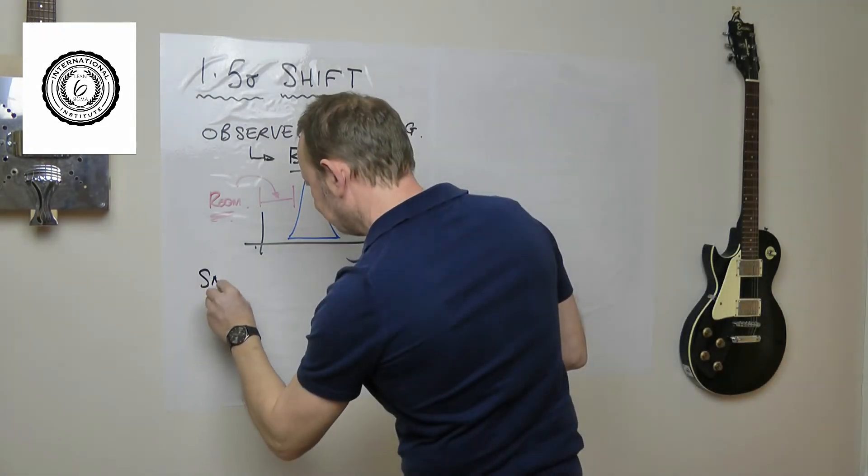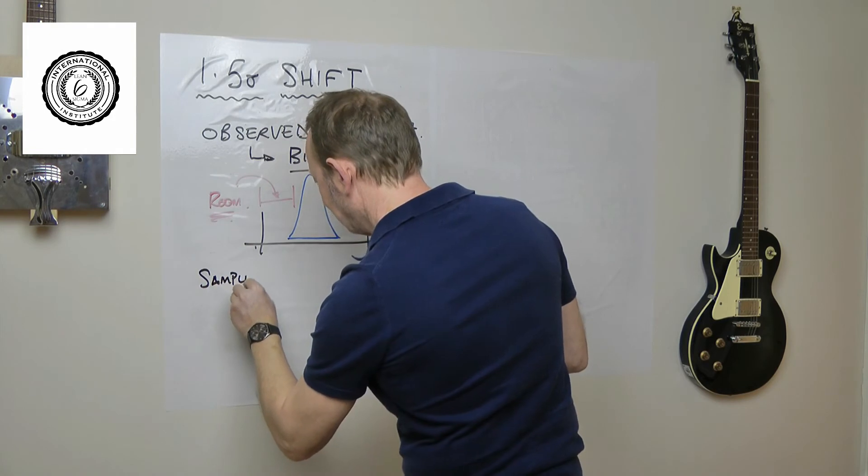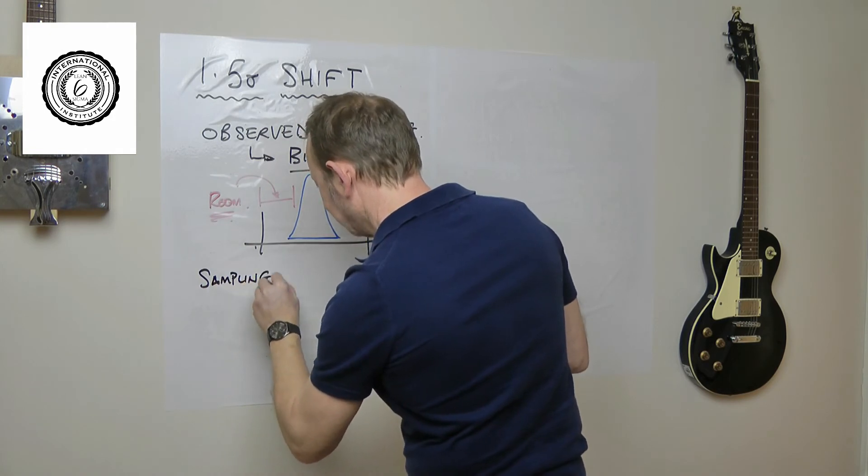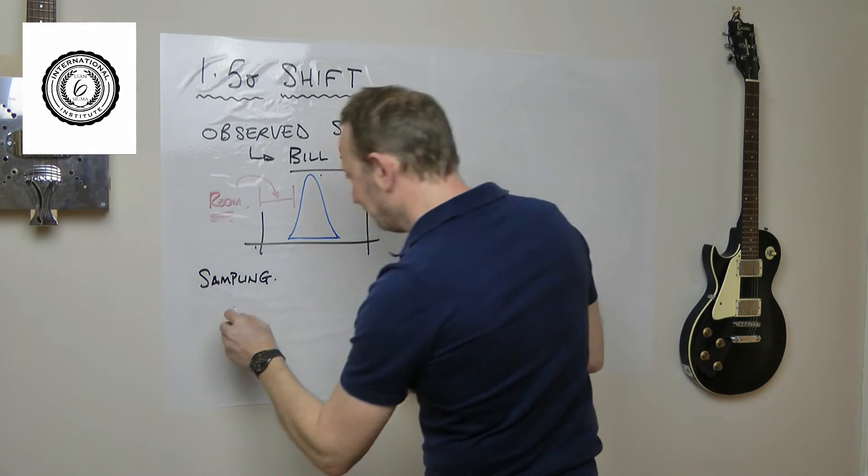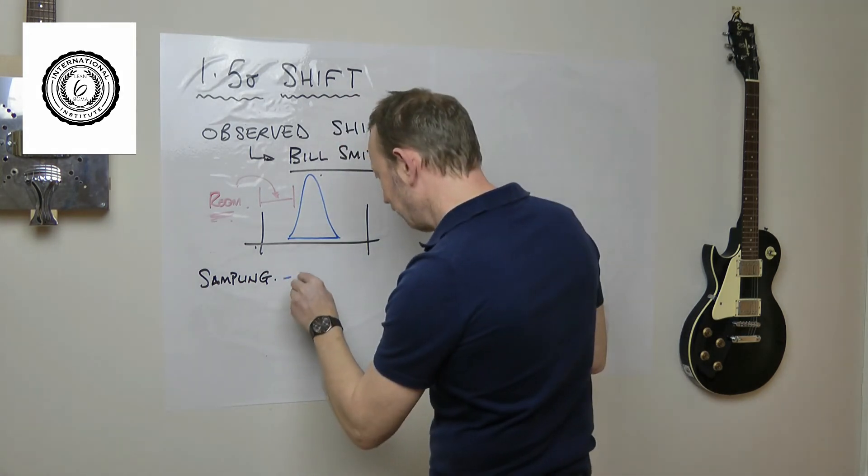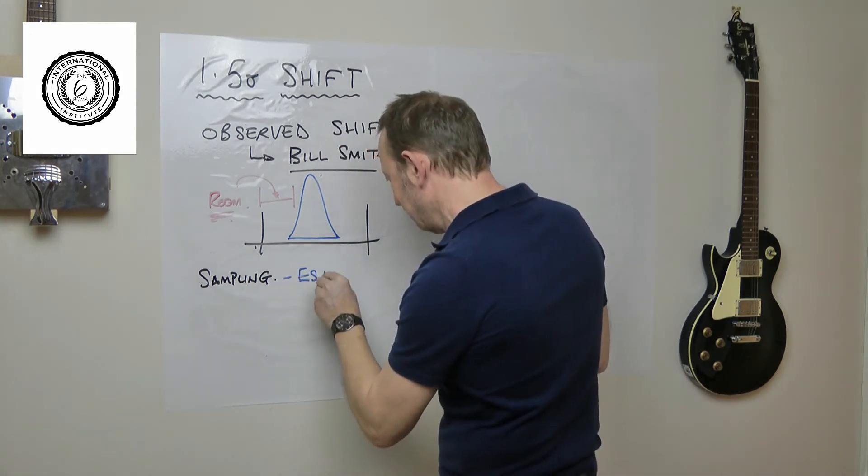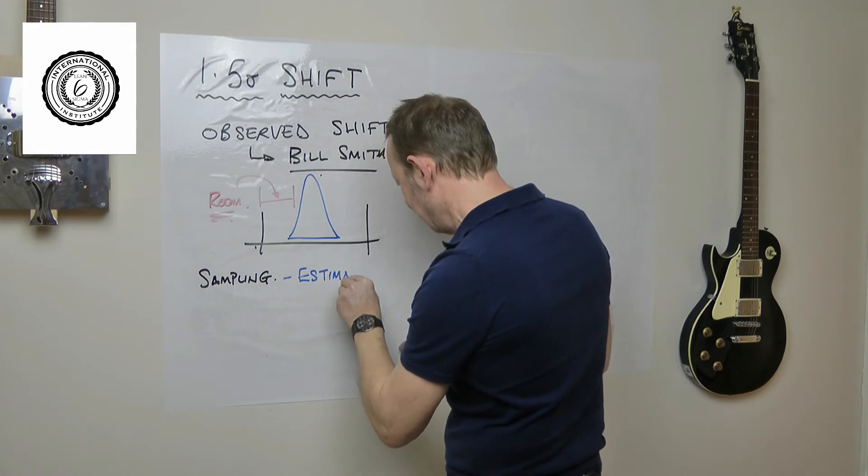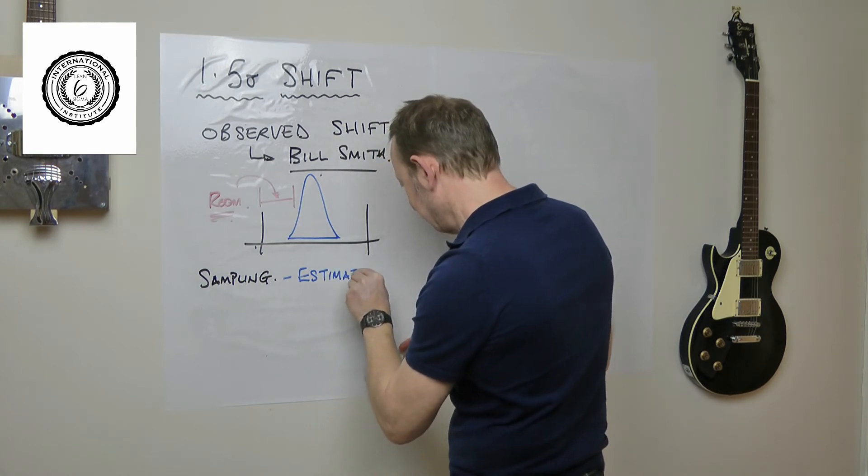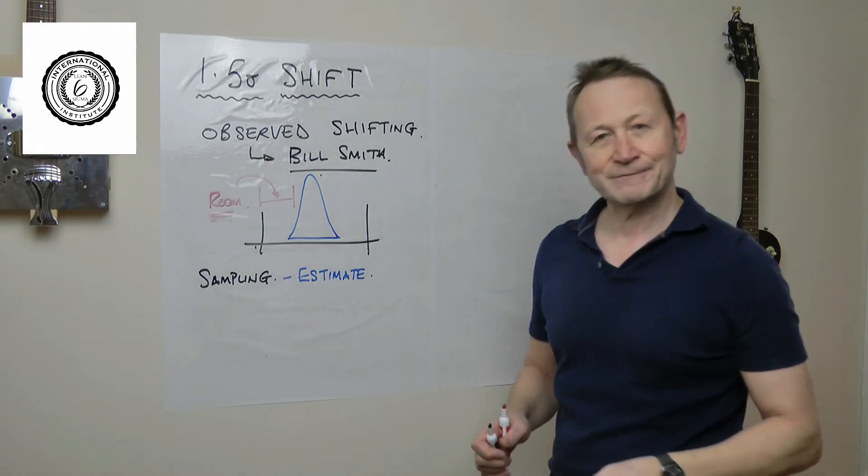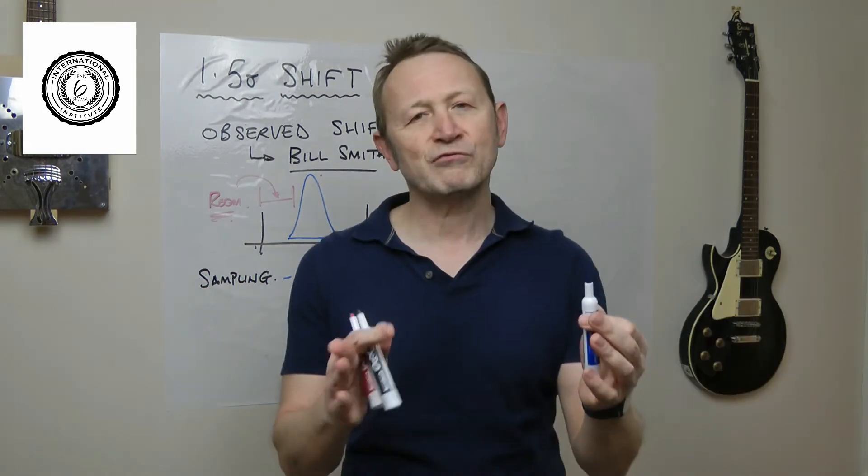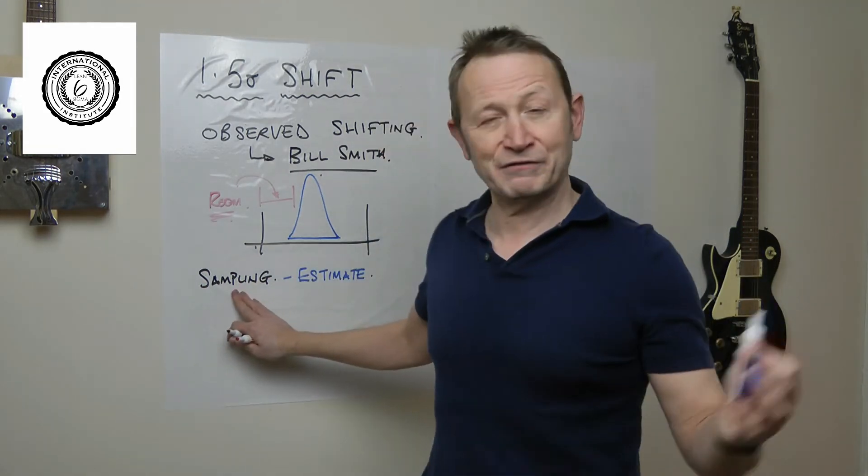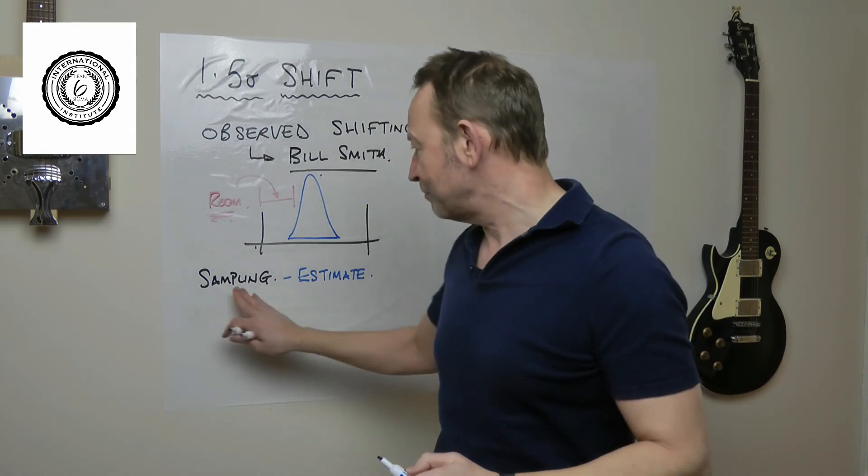So let's talk about the practical issues of the 1.5 Sigma shift. The first practical reason is the idea of sampling. Typically every number you look at in business is an estimate.